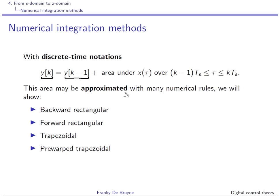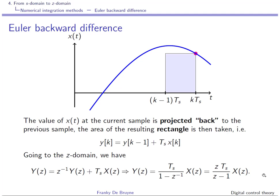This area can be approximated using many numerical rules, and we'll consider four of them: backward rectangular, forward rectangular, trapezoidal, and pre-warped trapezoidal. The most important ones are the first three. The backward and forward rectangular methods are the so-called Euler integration methods. We'll start with the Euler backward difference method.